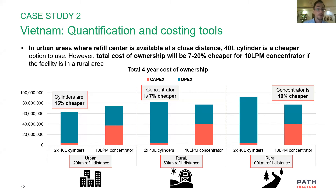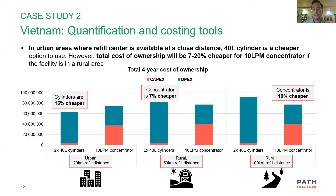We looked at three different scenarios to analyze whether two cylinders or a concentrator would be better. We looked at an urban health center within 20 kilometers of a filling station, a semi-rural center 50 kilometers from a filling station, and a very rural facility over 100 kilometers away from a source of oxygen. We then compared which option — cylinders or concentrators — would be cheaper at each facility over a four-year lifespan.